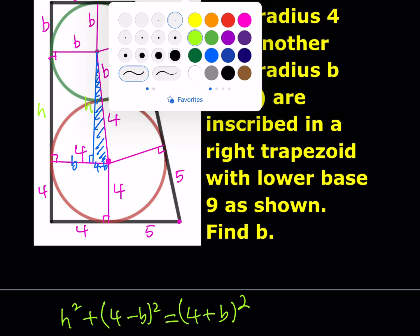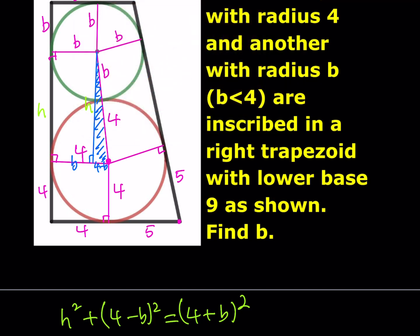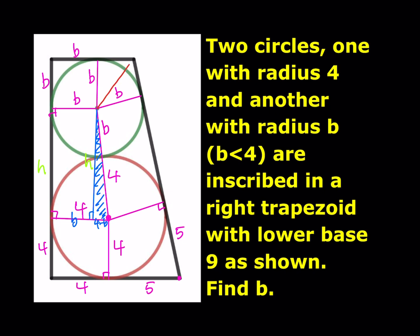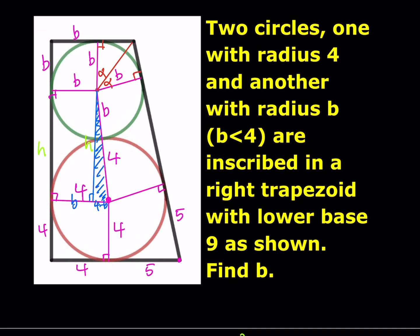The next step involves drawing angle bisectors. One of them looks like this. Let's call this angle alpha — both of these angles are alpha, so they're congruent. Then let's make another connection, and call these angles beta.